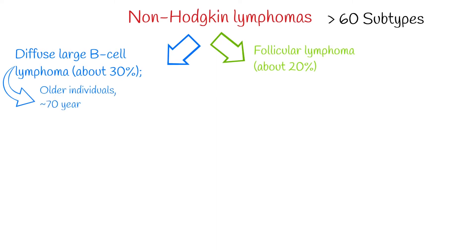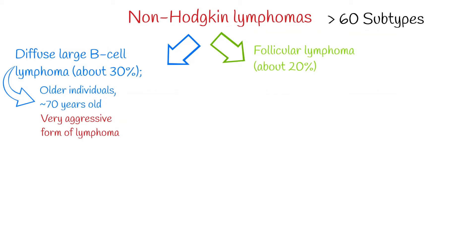Diffuse large B-cell lymphoma is the most common form of non-Hodgkin lymphoma among adults. This cancer occurs primarily in older individuals, around age ~70 years. It sometimes occurs in younger people and is rare in children. It is a very aggressive form of lymphoma.